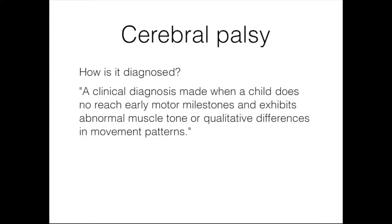Cerebral palsy is sort of just this umbrella term that covers a wide variety of brain injuries in children. There's really no consensus on how early CP can be reliably identified. A lot of children who are preterm or who have anoxic brain injuries will actually show some sorts of transient early neurological signs, which they at times will actually grow out of. So this can make early diagnosis difficult, and oftentimes physicians may be reluctant to make a diagnosis of cerebral palsy until the child is one, two, or even three years old.